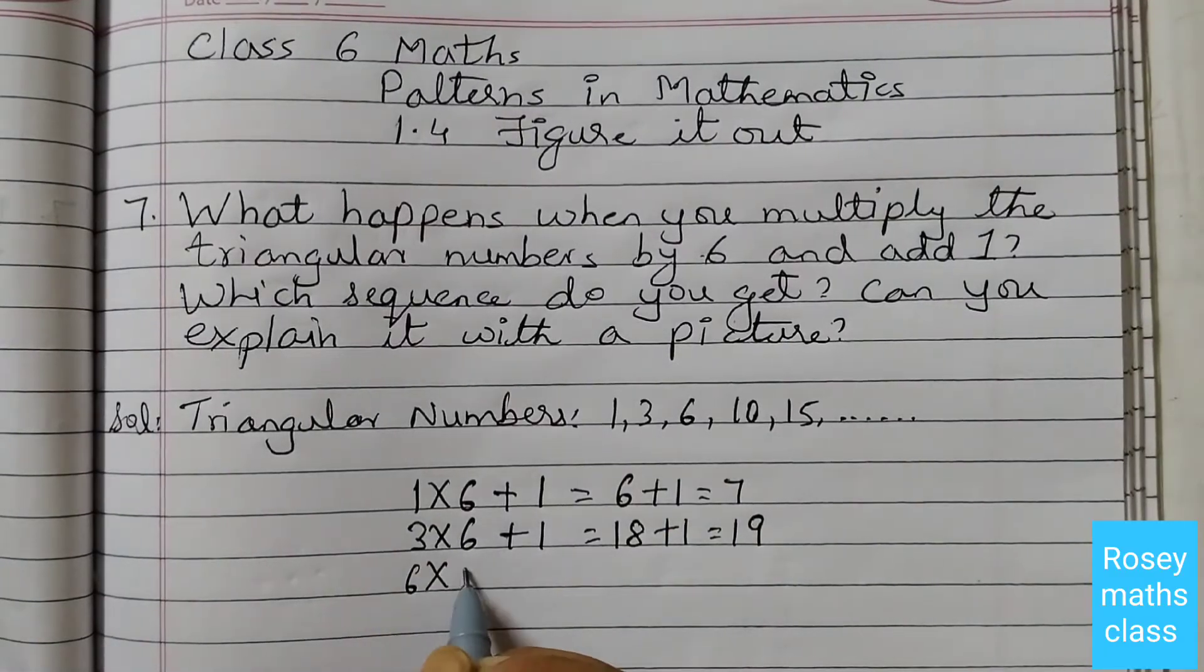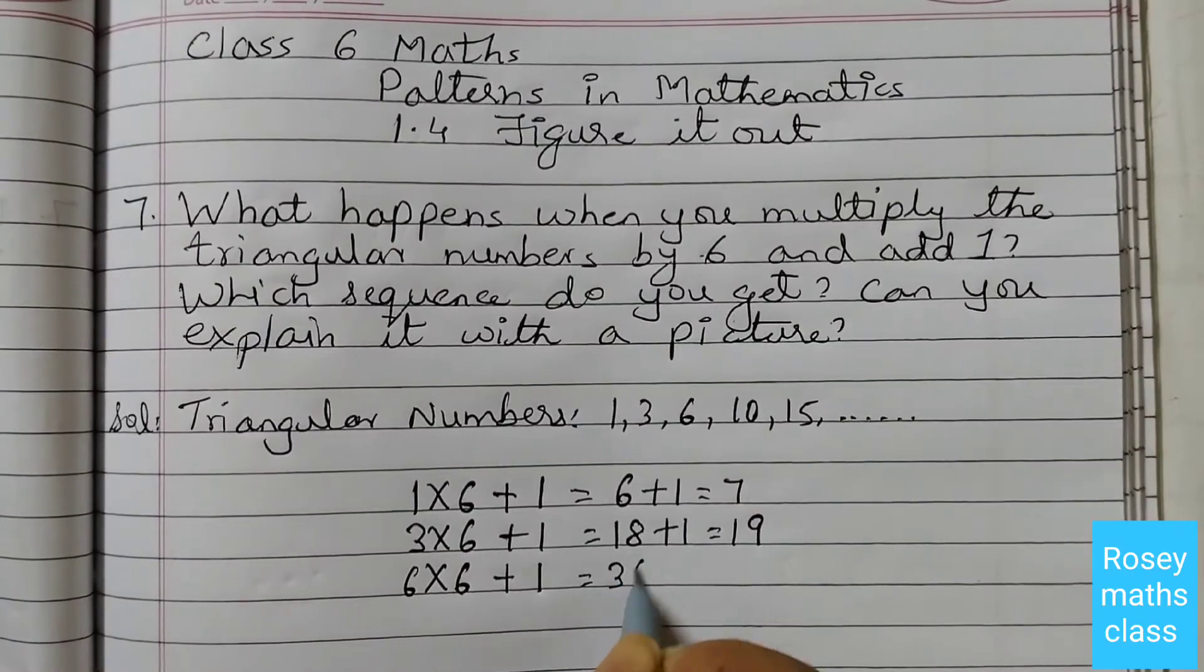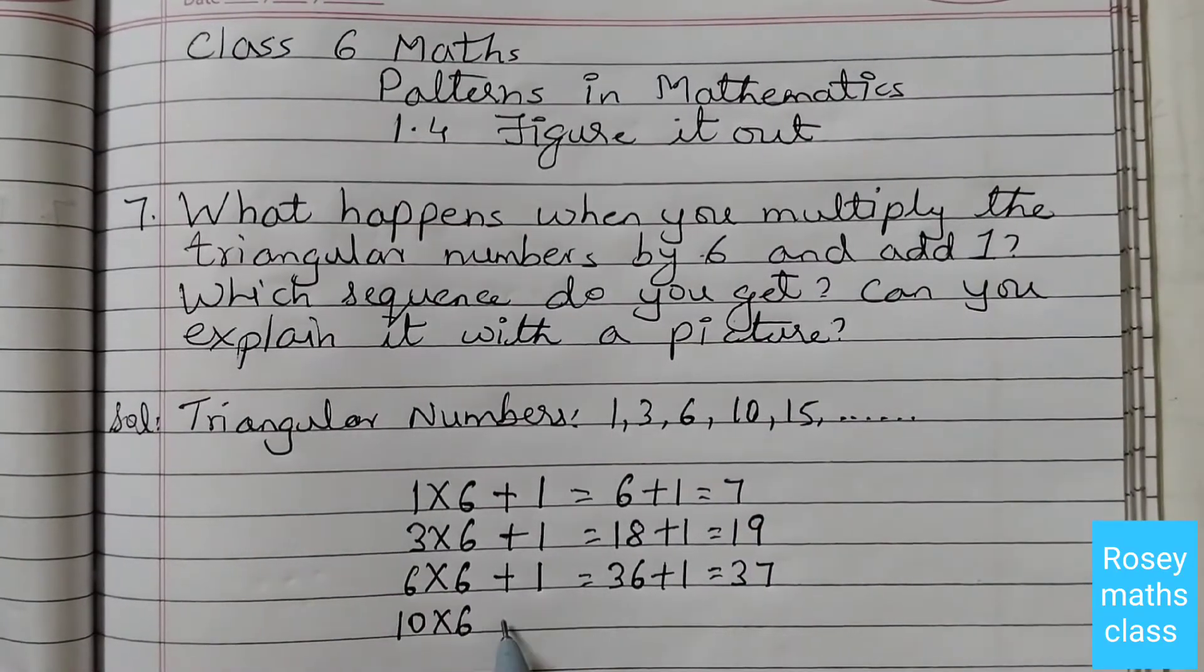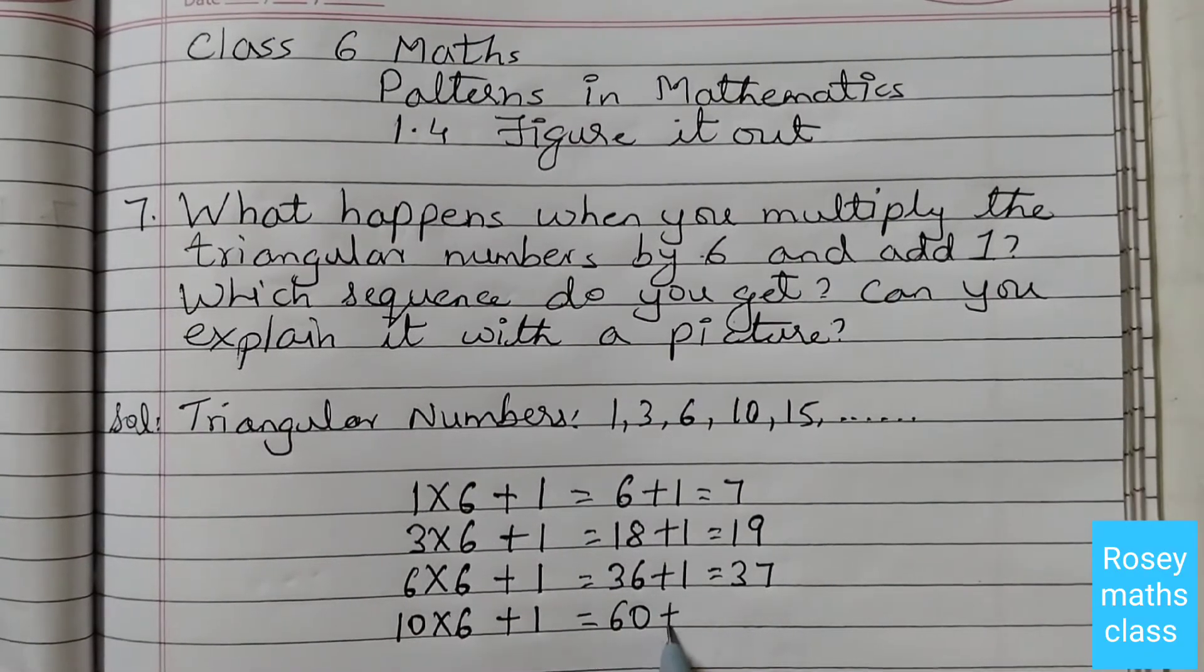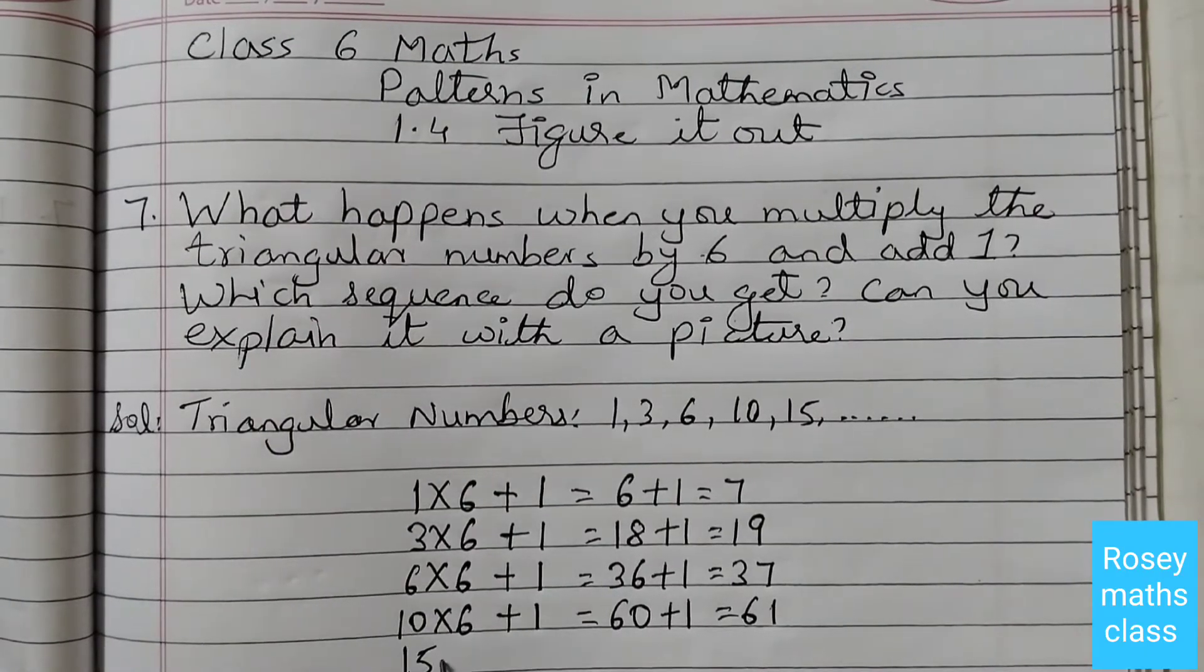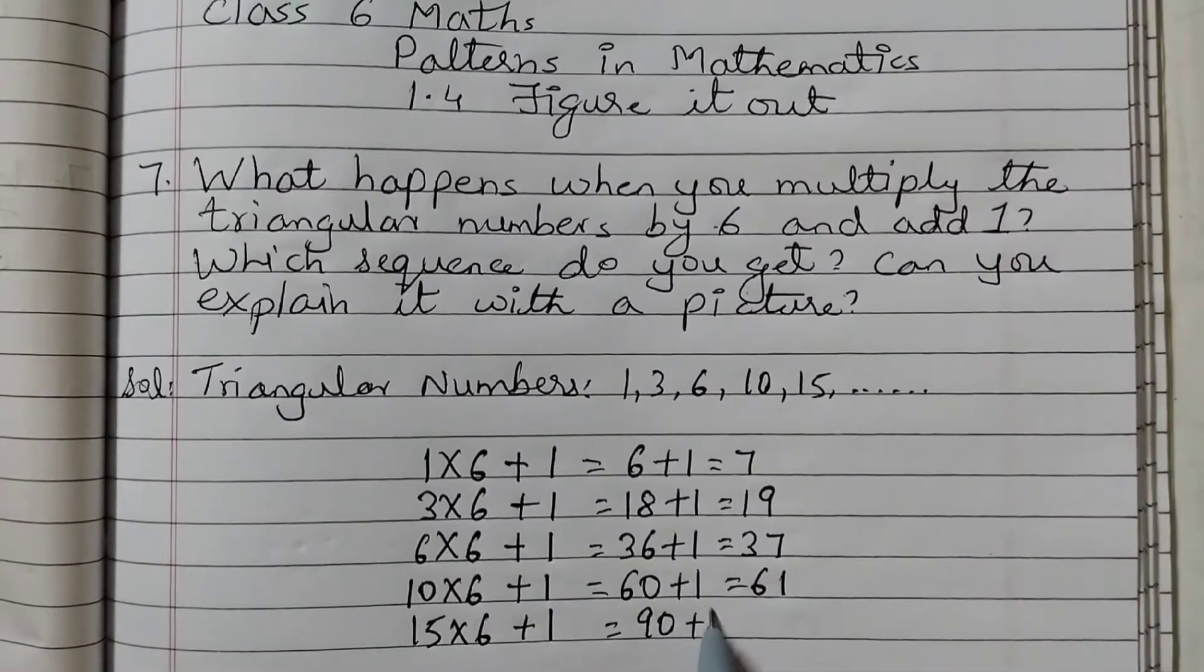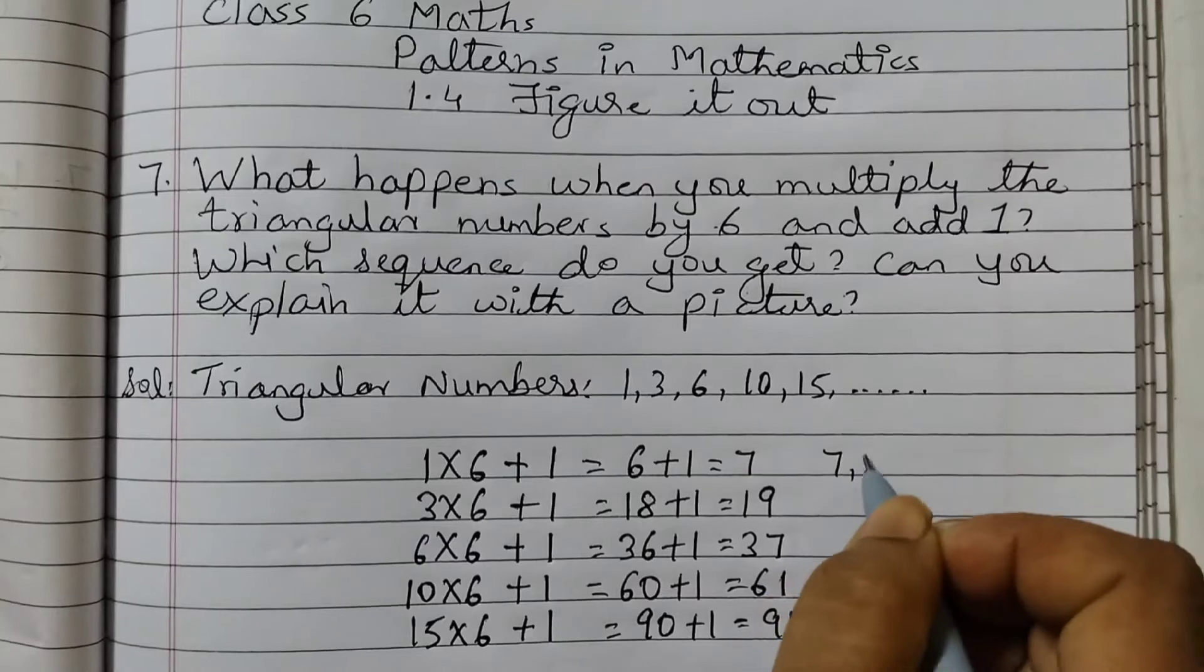The third triangular number is 6. 6 multiplied by 6 plus 1 we get 36 plus 1 equals 37. 10 into 6 plus 1 equals 60 plus 1, 61. Same way 15 into 6 plus 1, 15 into 6 is 90, 90 plus 1 is 91.